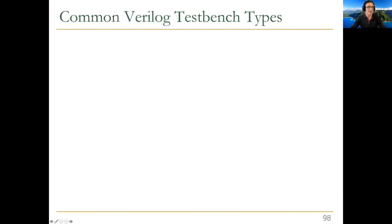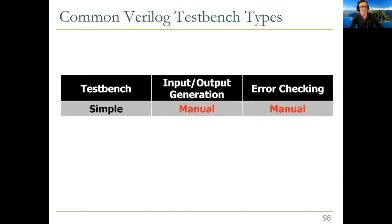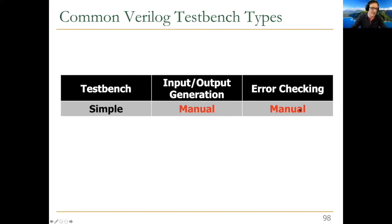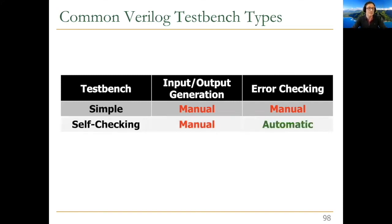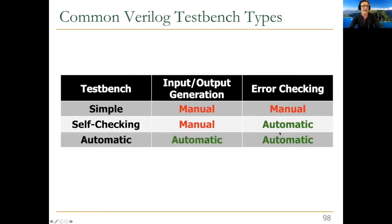Let's look at common Verilog test bench types. There are multiple. A simple test bench has everything done manually — input/output generation and results checking are done manually, which is a lot of work for the designer but works for small circuits. A self-checking test bench has manual input/output generation but automatic error checking — you automatically compare results. An automatic test bench has both input/output generation and error checking fully automated.